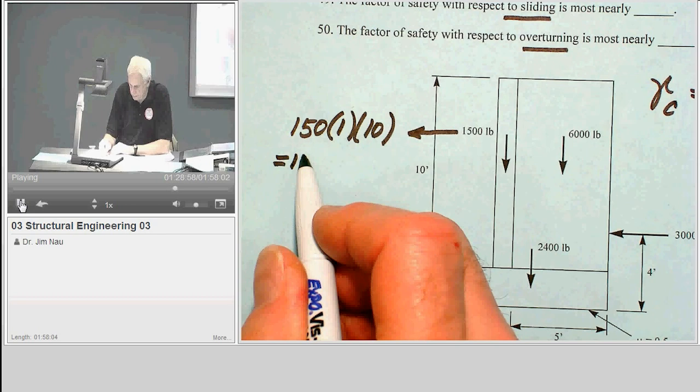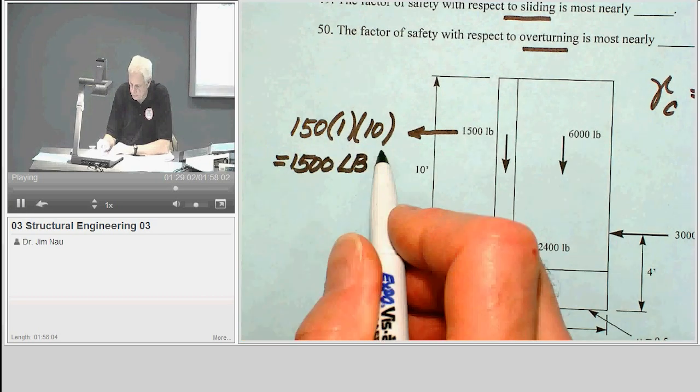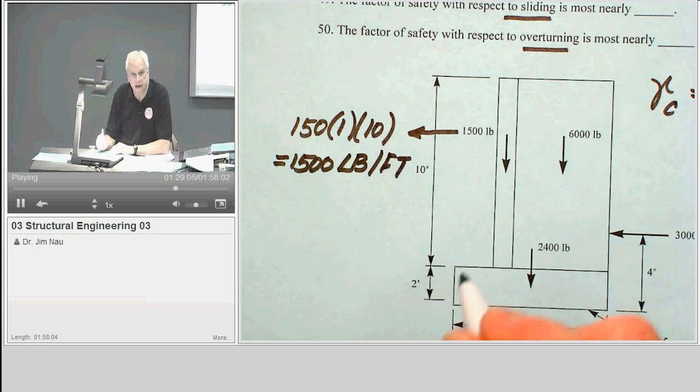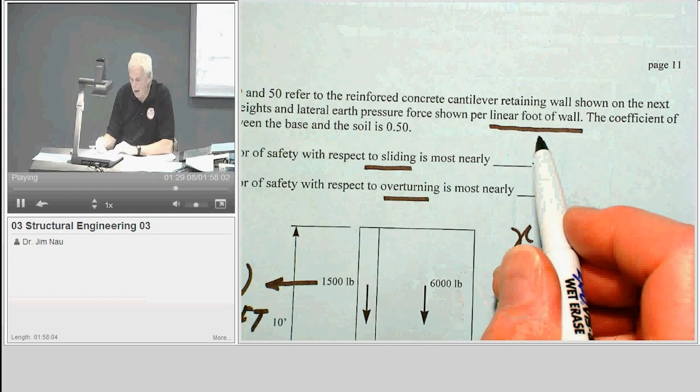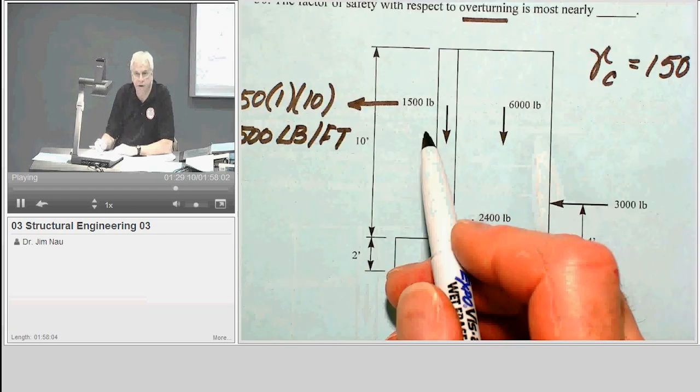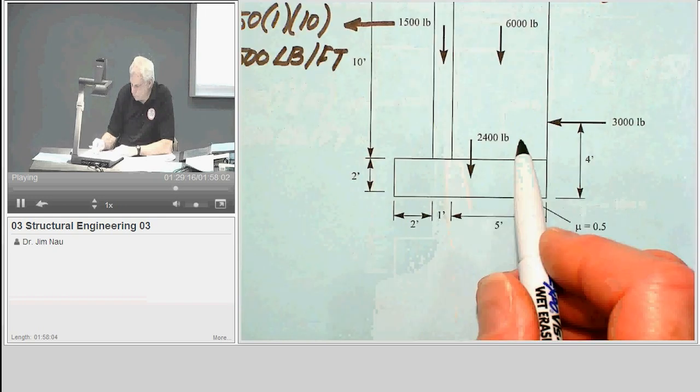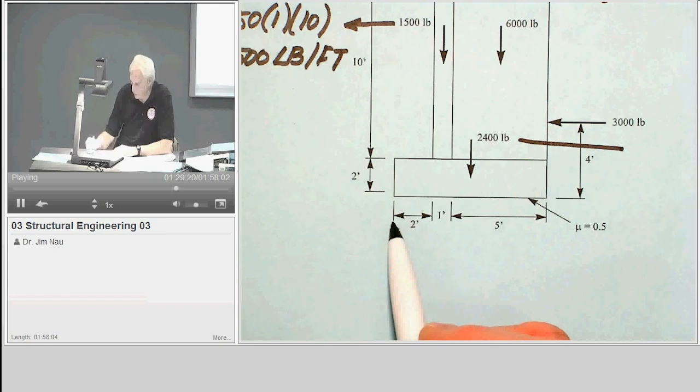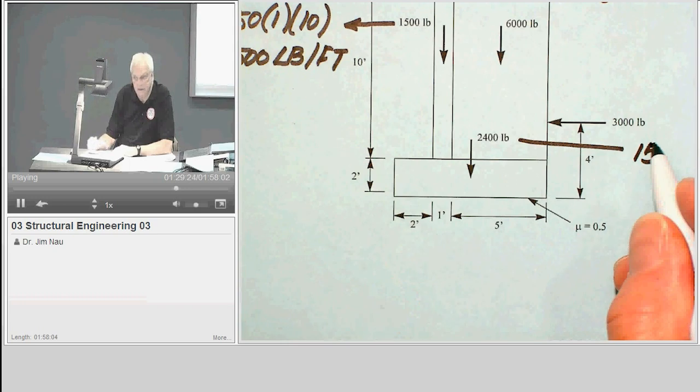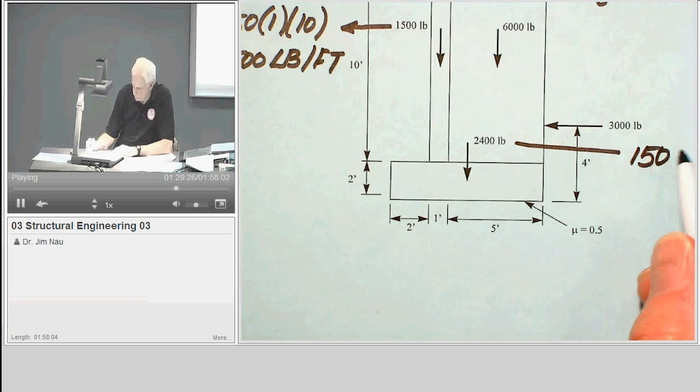1,900 pounds per foot. And the per foot is into the page, so that's the per linear foot of wall. So however long that wall is, every foot of that stem weighs 1,500 pounds. The footing is 2,400 pounds. It's 8 feet by 2 feet, so that should be 150 times 5, 6, 7, 8 times 2. That's how I got that.